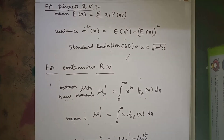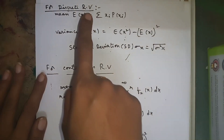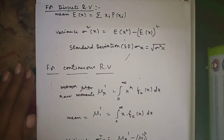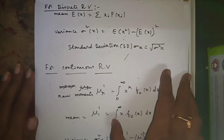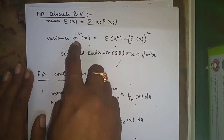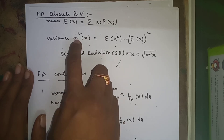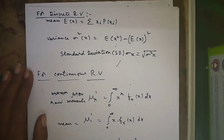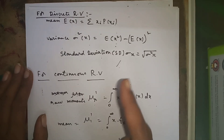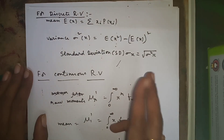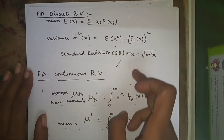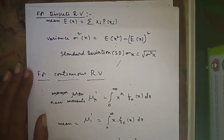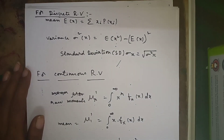In the case of a discrete random variable, the mean or expected value formula is: mean = sigma of xi into p(xi). Variance sigma-squared of x is equal to E(x²) minus E(x) whole square. Standard deviation sigma x is equal to the square root of variance.